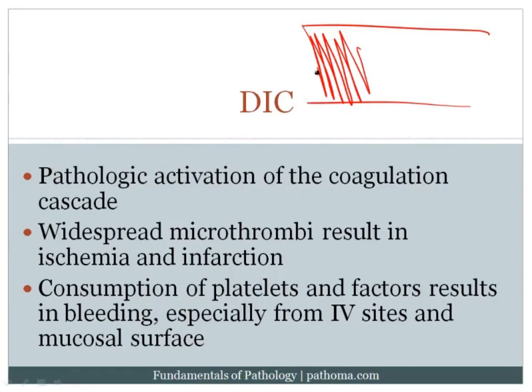A second problem of DIC is that as you activate the coagulation cascade and produce massive blood clots throughout the blood vessels, you consume platelets and coagulation factors. As these are consumed, patients start bleeding — classically from IV sites, but also from any mucosal surface: the mouth, the lungs by coughing up blood, the GI tract, and from urothelial-lined surfaces causing hematuria.